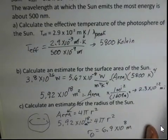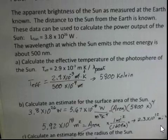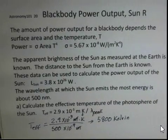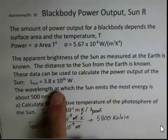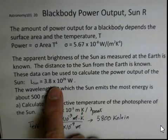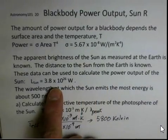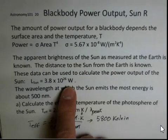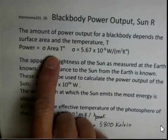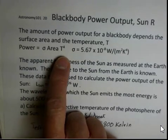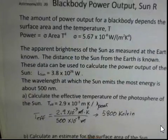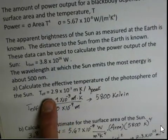So there we are with an estimate of the radius of the sun using the characteristics of light from the sun. And the apparent brightness and distance allow astronomers to calculate the energy per time being emitted from the sun, the number of watts. And the relationship for a blackbody allows us to calculate the area once we know the temperature. And we get our temperature from Wien's law.